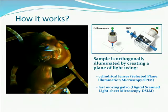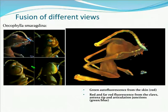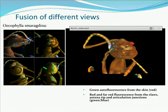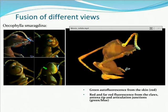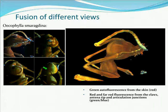One problem with these samples is that when illuminating from one side with opaque samples, the far side of the sample is obscured. A solution is multi-view fusion: rotating the sample, acquiring sequentially different views, and then applying algorithms to fuse them. Here you can see one example of a fused ant image — completely autofluorescent, acquired with three different channels, then all channels and views fused to create a fantastic 3D reconstruction.